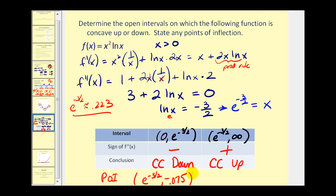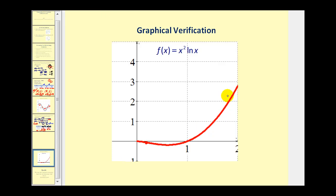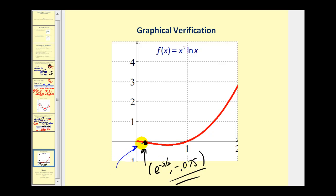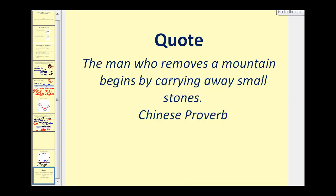Let's verify all this information with a graph. It is a little difficult to tell, but right around here we do have a point of inflection right below the x-axis, which verifies our result. This very small interval is concave down and this large interval is concave up. I hope you found these additional examples helpful. Thank you for watching.